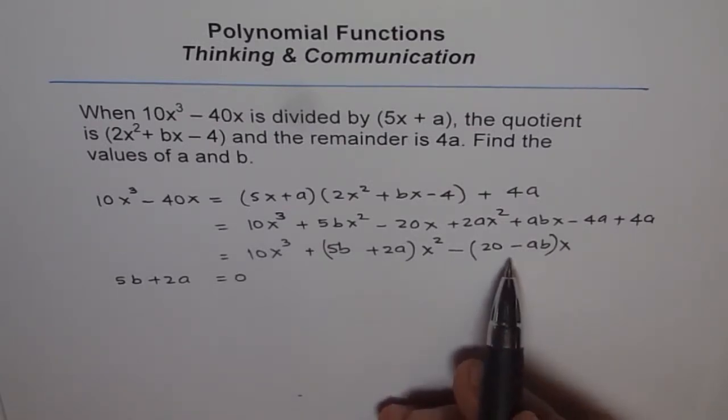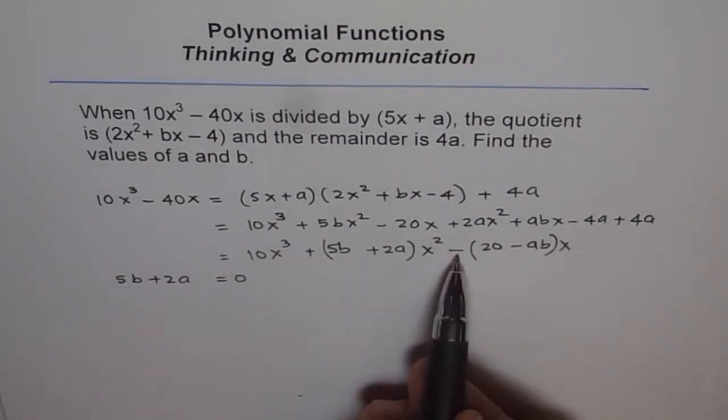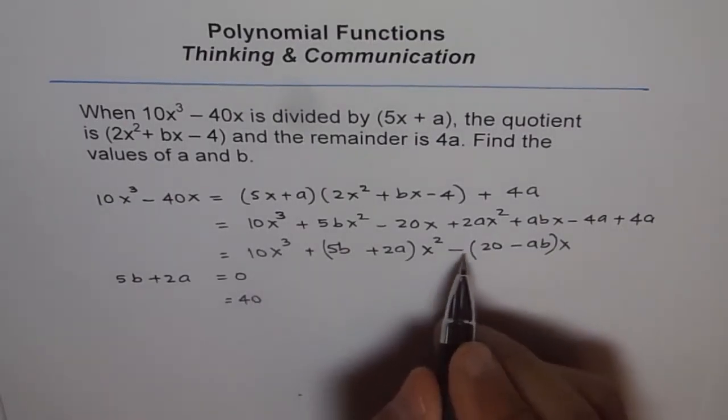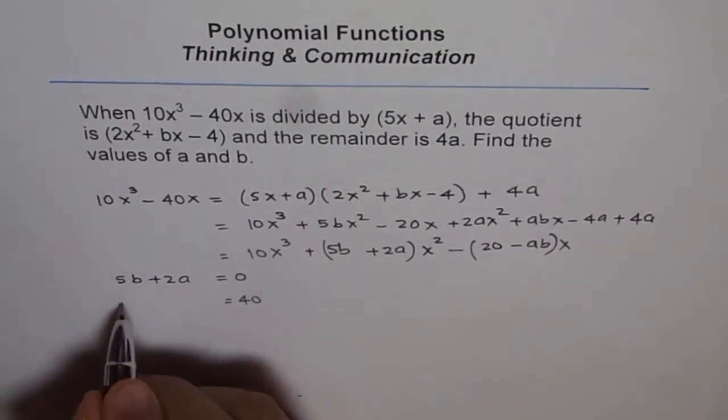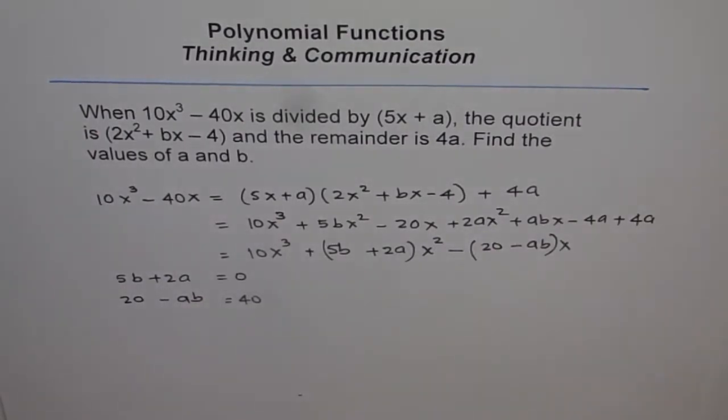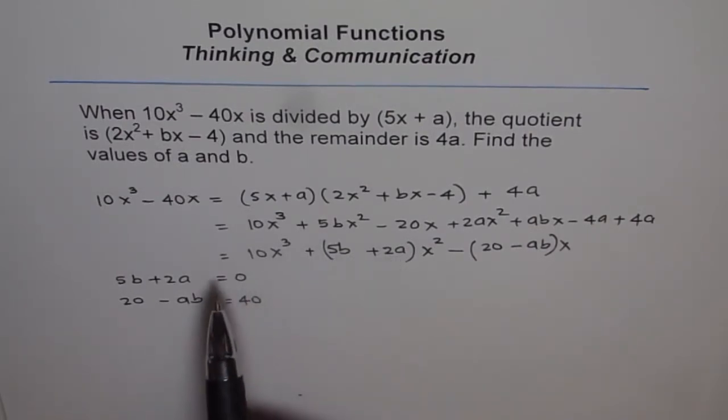How about x coefficient? x coefficient here is minus 40. I have written minus, so it is just 40. So I will write 40 here and with that minus I have 20 - ab here. So 20 - ab should be equal to 40. If 20 - ab is 40 and 5b + 2a is 0, then the right side is equal to left side.